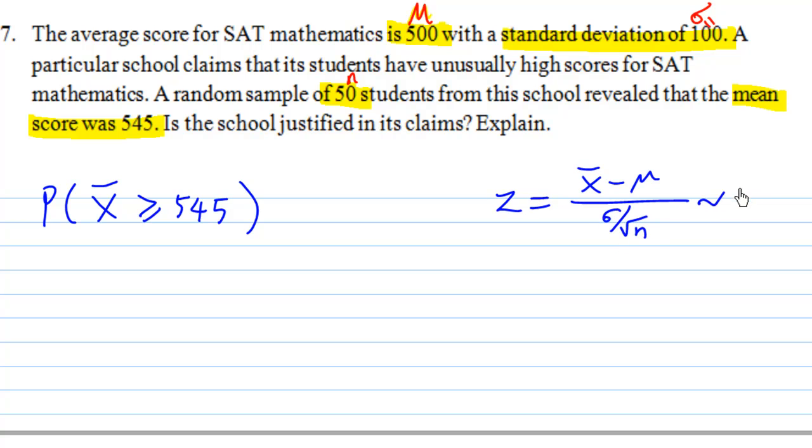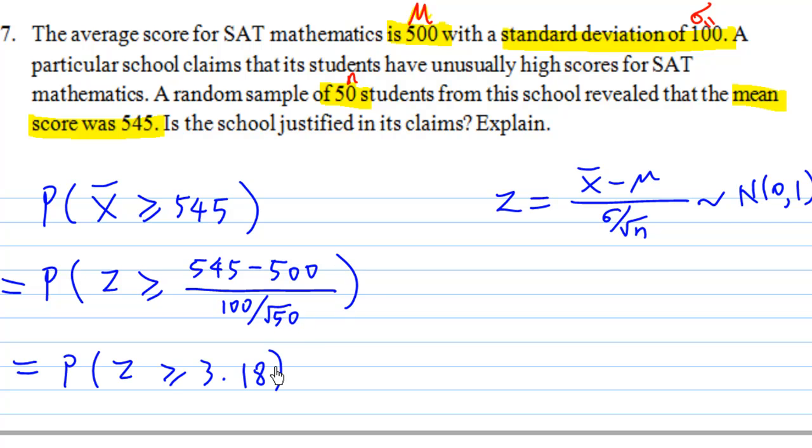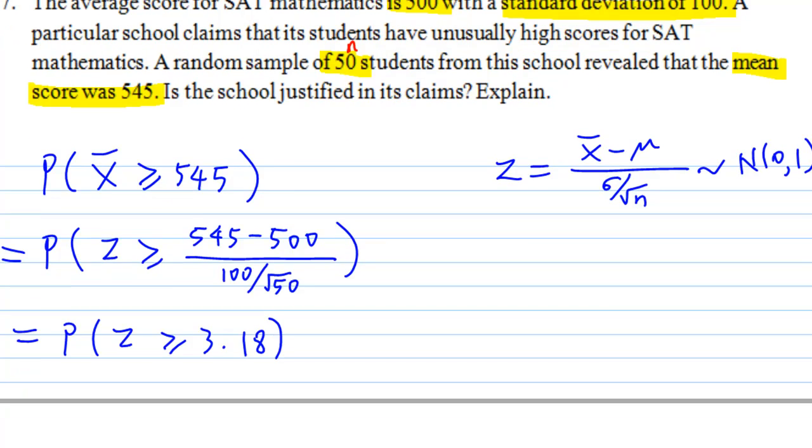The probability is the same as z greater than or equal to 545 minus mu over sigma is 100 divided by square root of n. n is equal to 50. This is the same as the probability of z greater than or equal to 3.18.